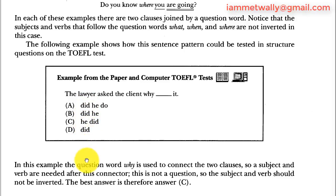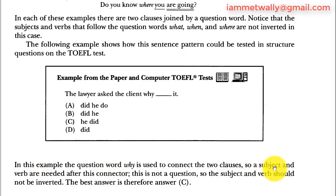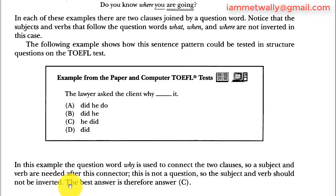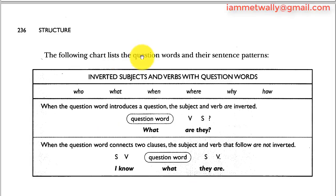In this example the question word 'why' is used to connect two clauses, so a subject and the verb are needed after the connector. This is not a question, so the subject and the verb shouldn't be inverted. The best answer is therefore answer C: 'he did.'